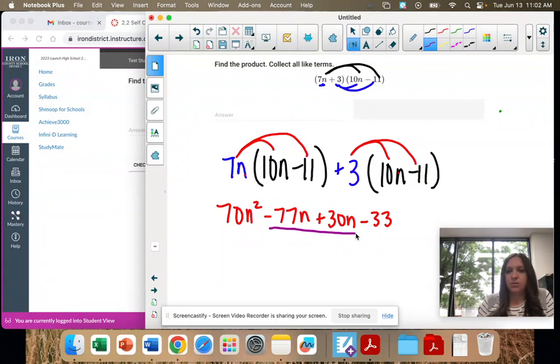Here's our middle two terms that both have an n. These are like terms. We're going to combine them. Negative 77 plus 30 is negative 47, we still have the n.